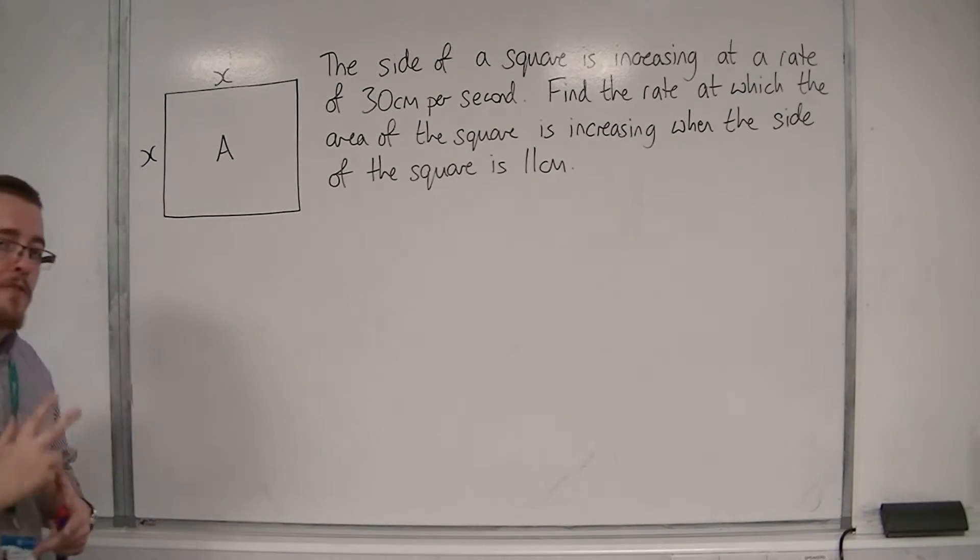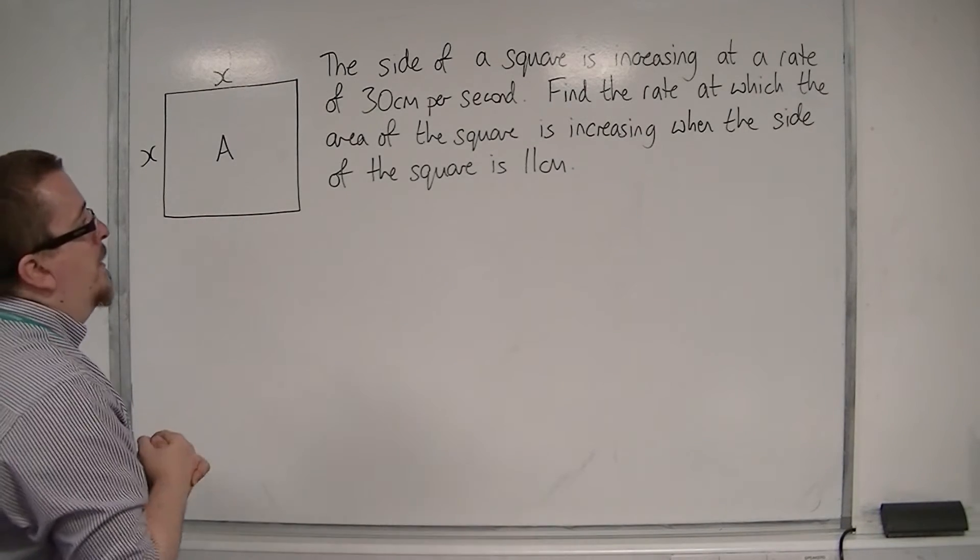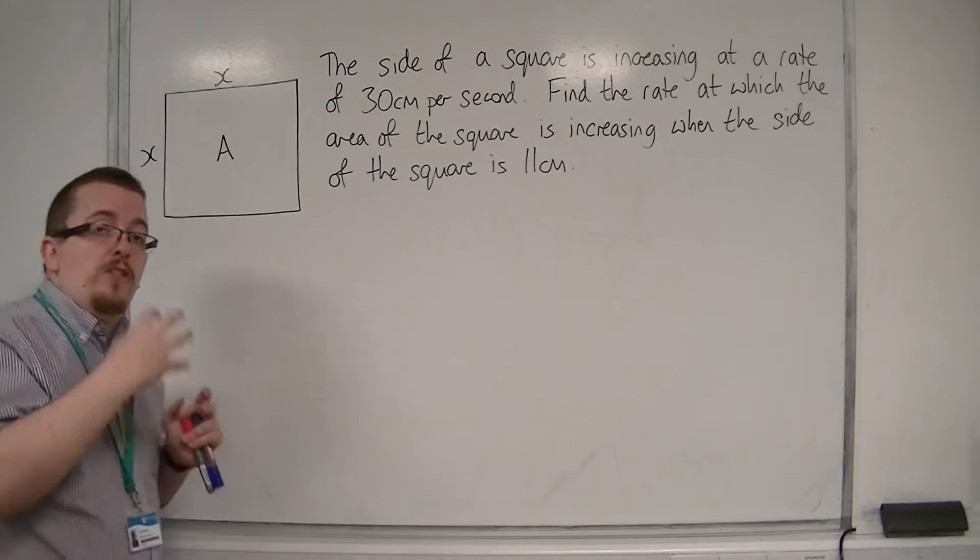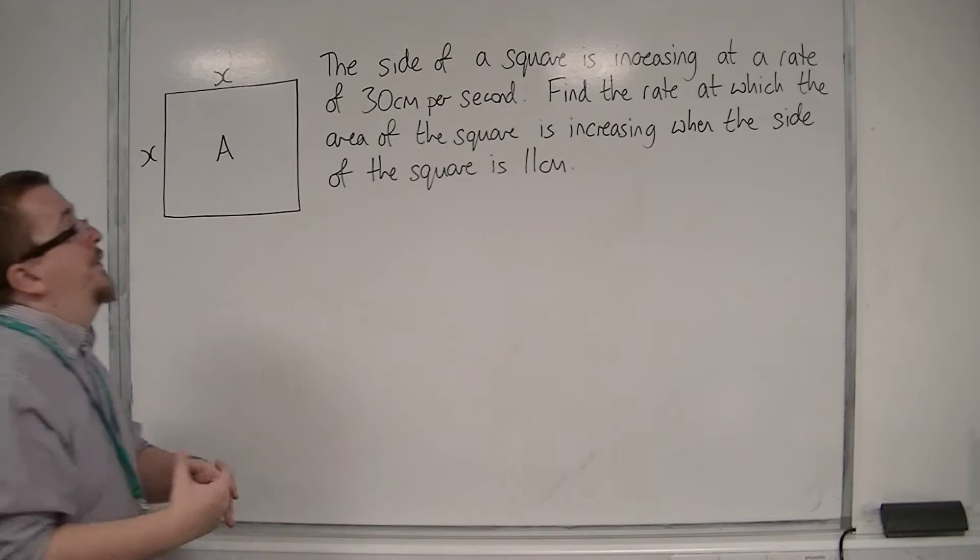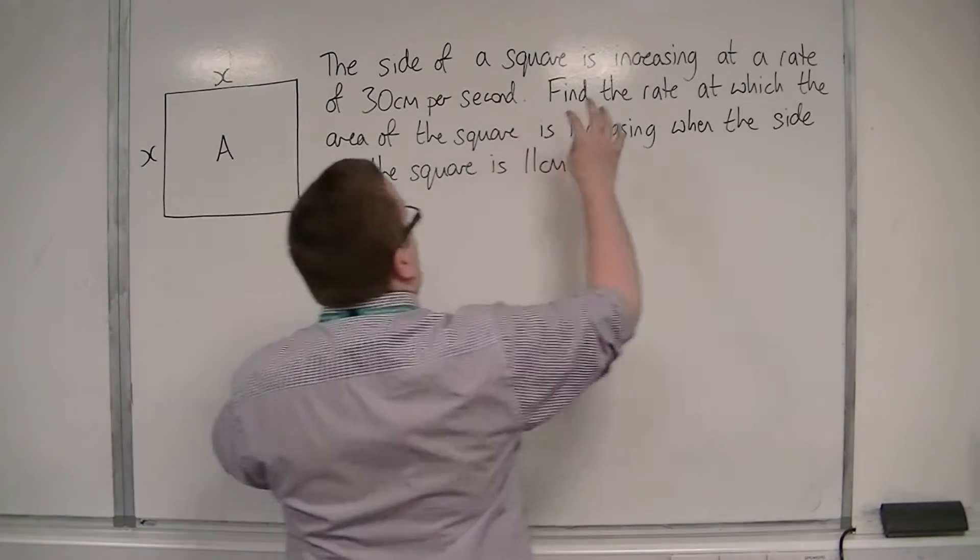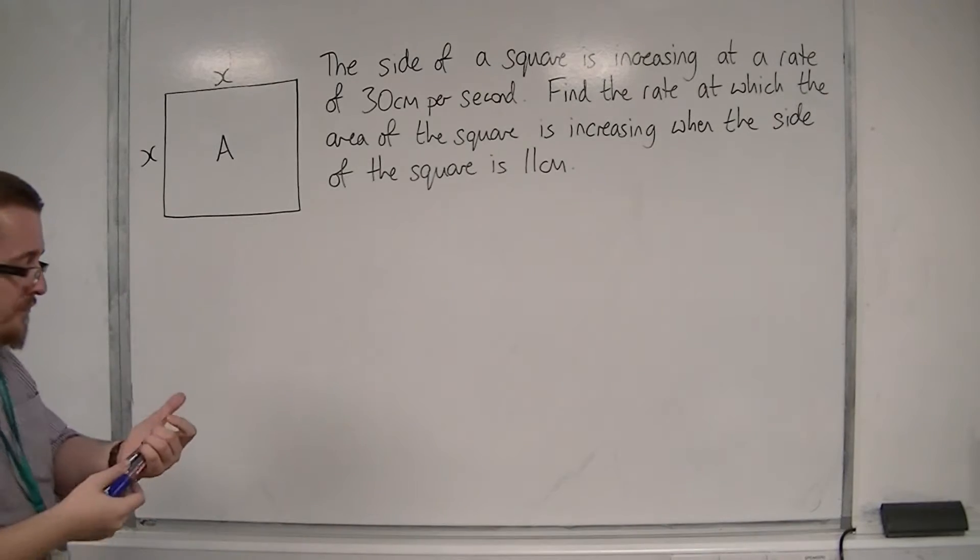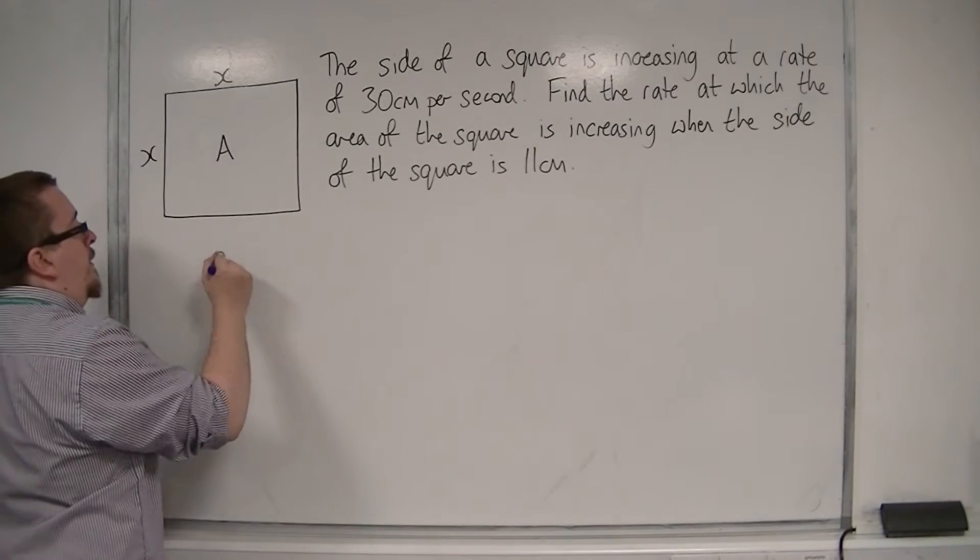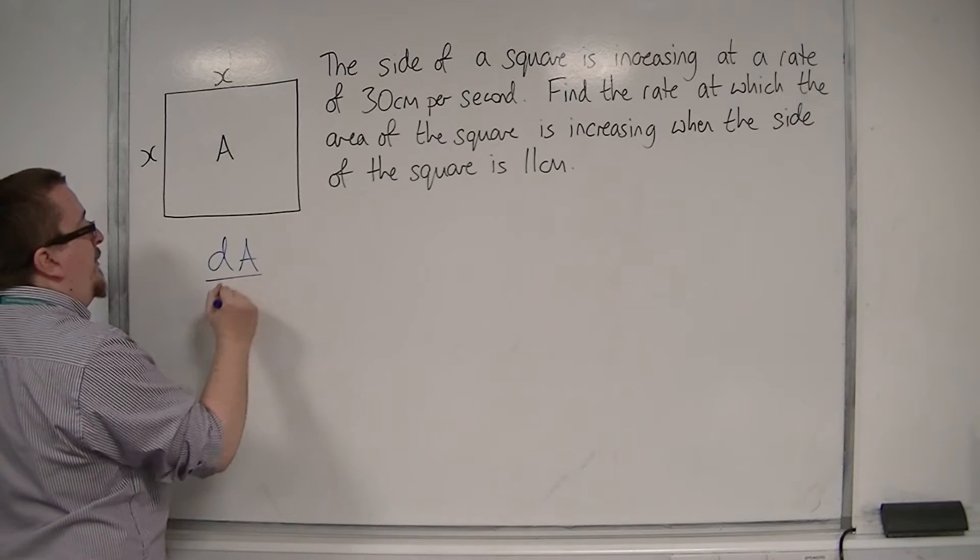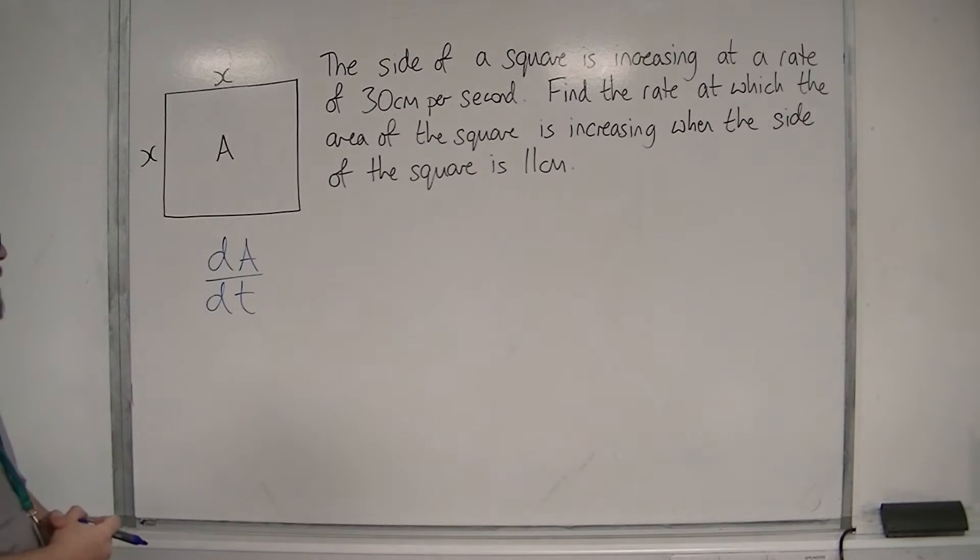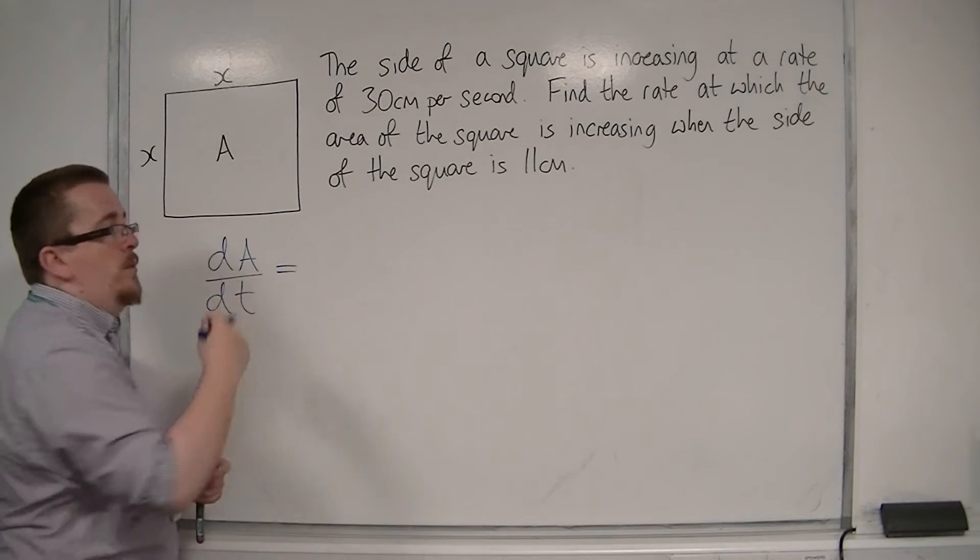So we need three bits of information. One is the bit that we're trying to find, and that's really what I'd like to write down first. We're asked to find the rate at which the area of the square is increasing. So the rate at which the area is increasing with respect to time would be dA by dt. That is what we want to find.